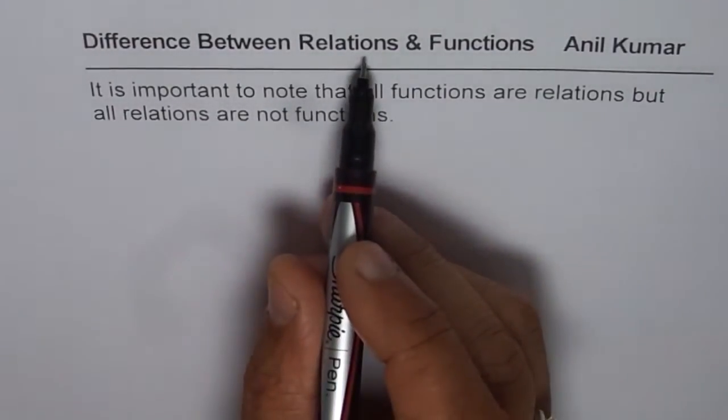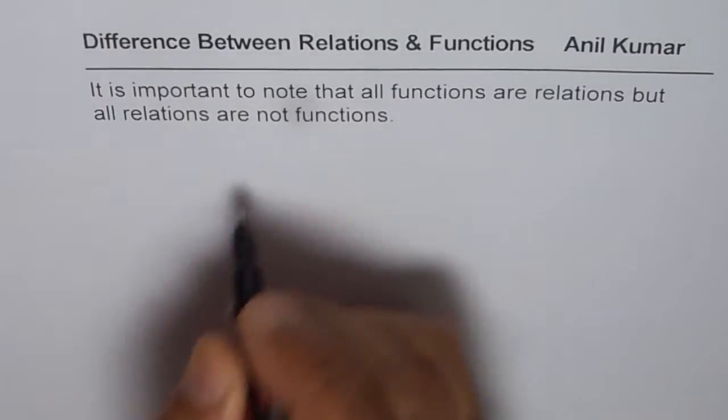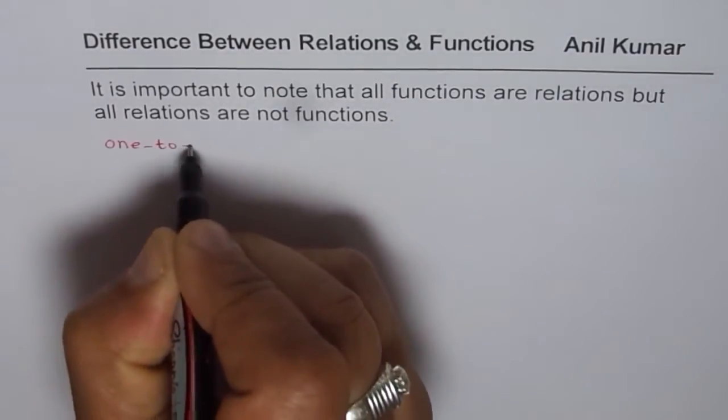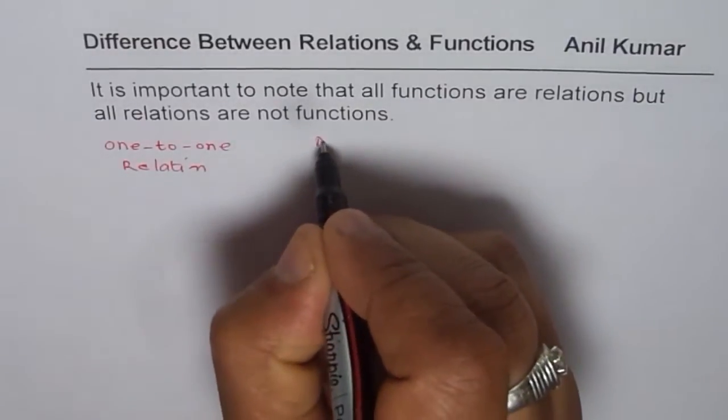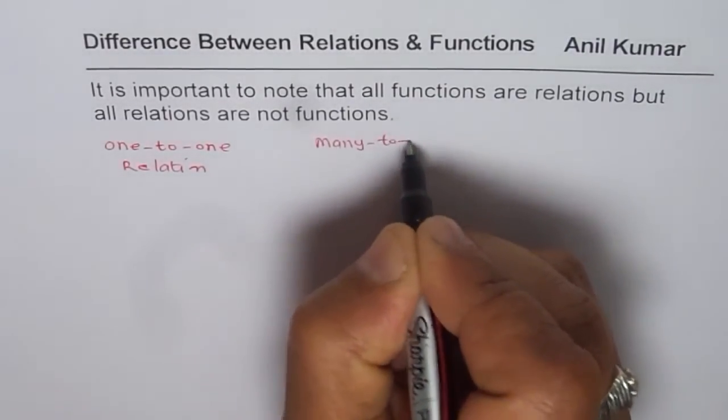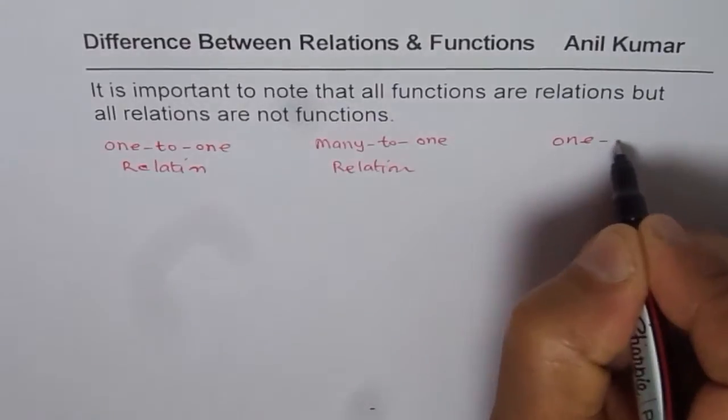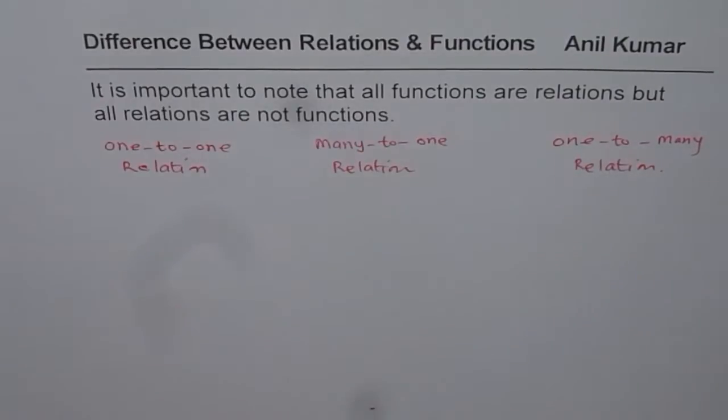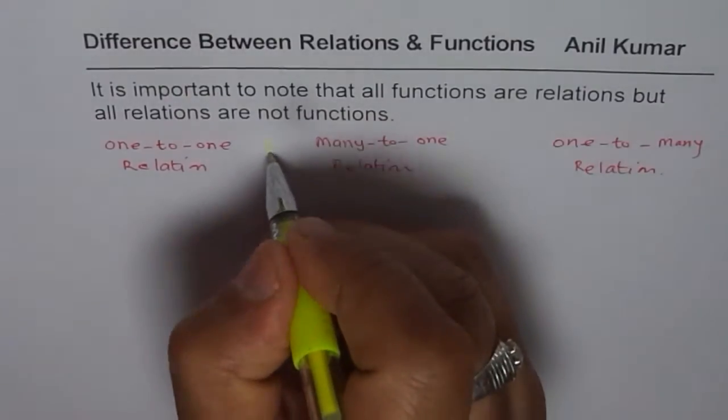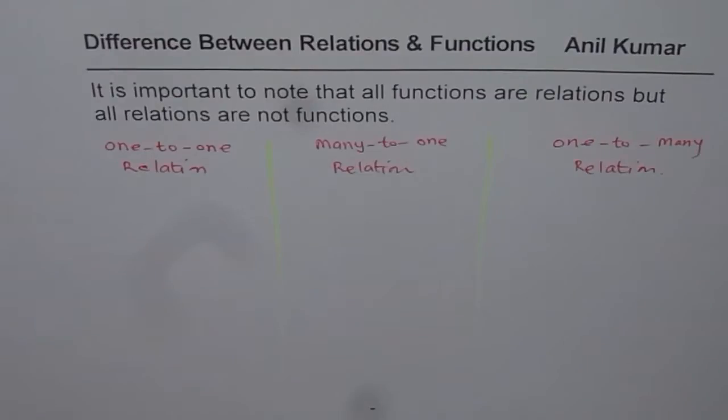Now we will discuss different kinds of relations and see which one of these are functions and which are not. As far as relations are concerned, we know relations could be one-to-one relation, many-to-one relation, or one-to-many relations. In one of the videos we have discussed that relations are basically three kinds. They could be either one-to-one or they could be many-to-one or one-to-many. These are kinds of relations which we have.